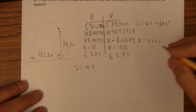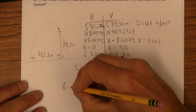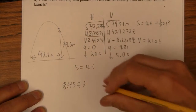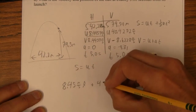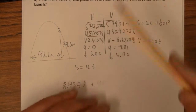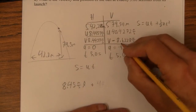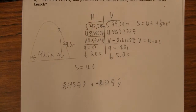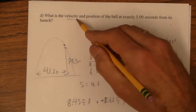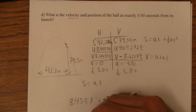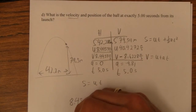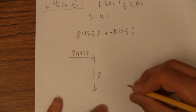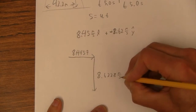There are two ways to write the velocity — it has to be a vector. We could write it as components: 8.45 meters per second in the X direction and negative 8.62 meters per second in the Y direction, since it's going down. But probably they want us to express it as an angle-magnitude vector. So let's go over 8.4457 and down 8.6228 meters per second and find the magnitude.